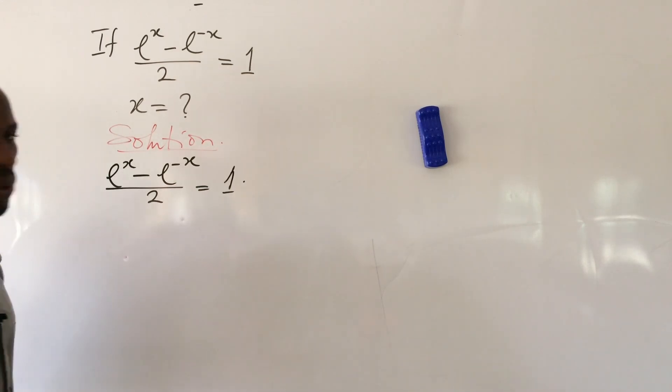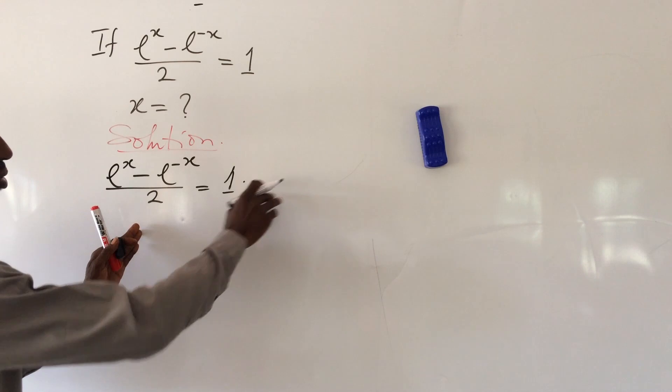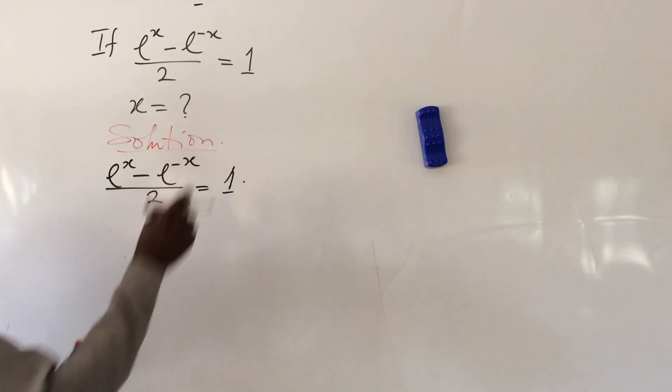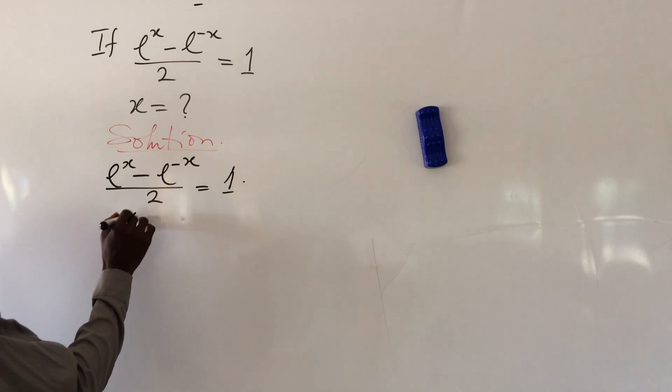We put down our question: e^x - e^(-x) all over 2 equals 1. The first thing we'll do is eliminate this 2 by multiplying through by 2.